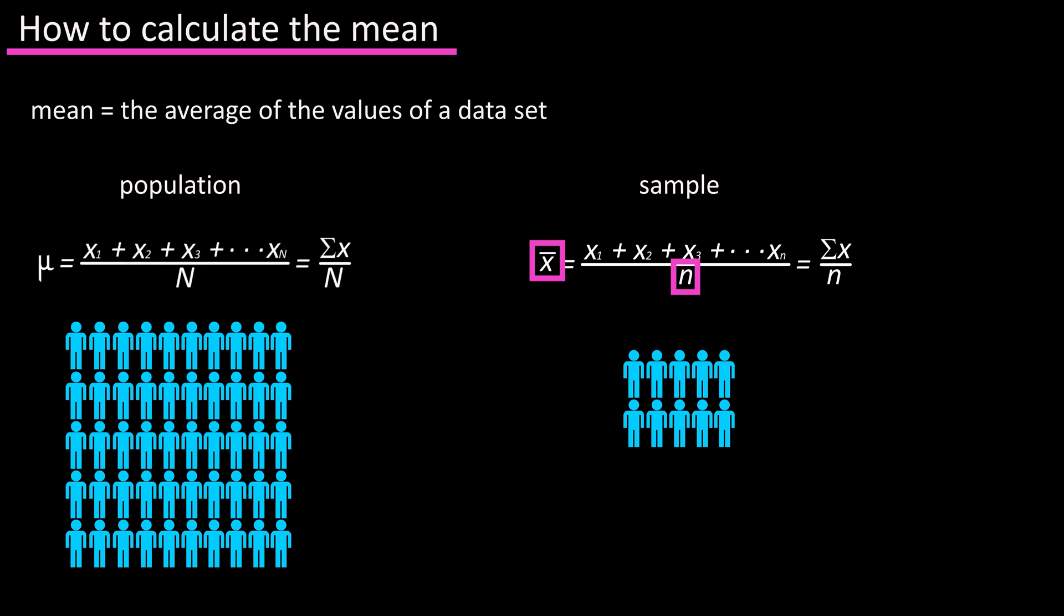Here is the formula for finding the mean of a population. Basically, x bar is replaced by this character called mu, and the small n is replaced by a large N.